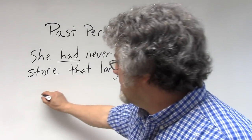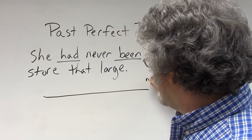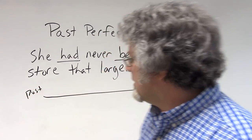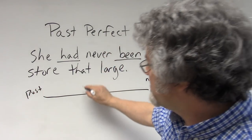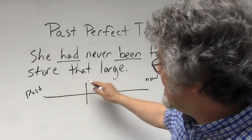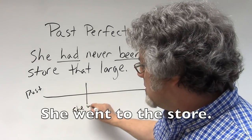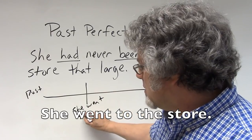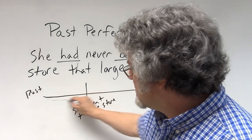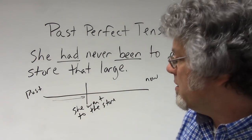So on the timeline, this is now, this is the past, and at this point here, this is when she went to the store. Up to this point, she had never been to a store that large.